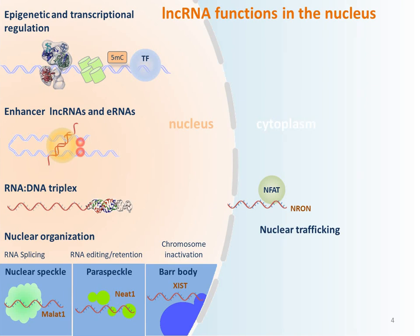lncRNAs regulate gene expression by many mechanisms. About 90% of lncRNAs are localized in the nucleus, where they can recruit chromatin modifiers and transcription factors to regulate target gene expression. A class of lncRNAs are enhancer lncRNAs produced in active enhancers that become an active enhancer component to mobilize target gene expression. Many lncRNAs can form Hoogsteen DNA-RNA triplexes and interfere with promoter activities, regulating nearby associated protein-coding genes in cis on the same DNA strand.